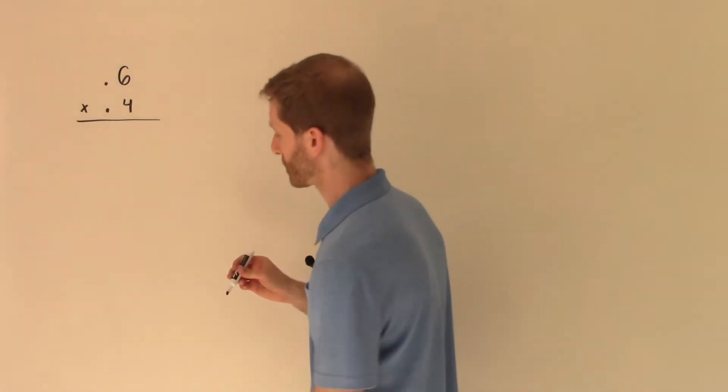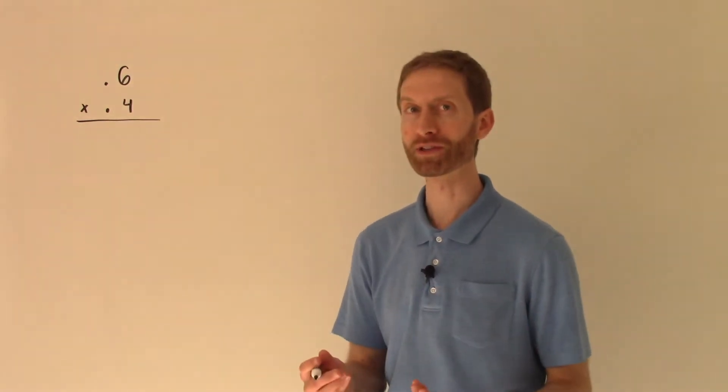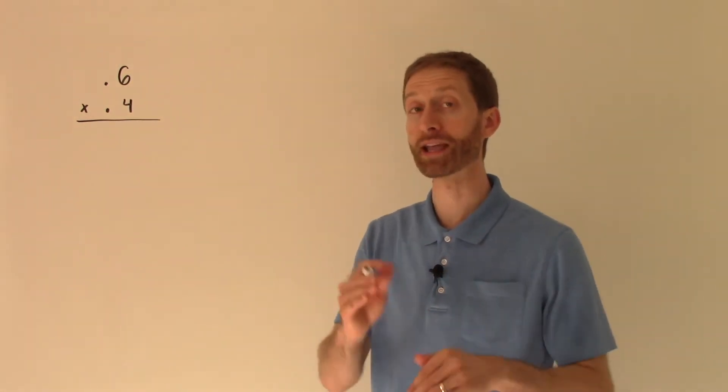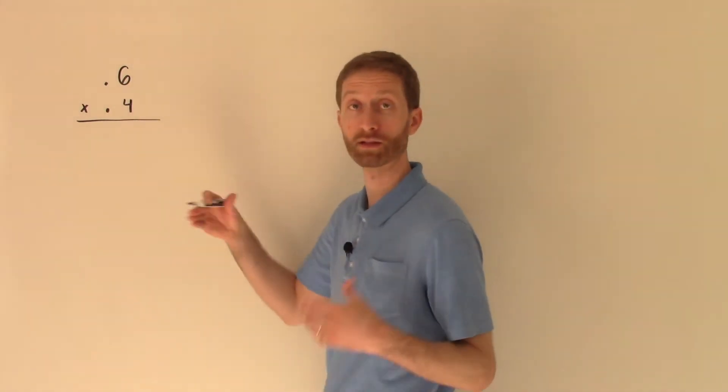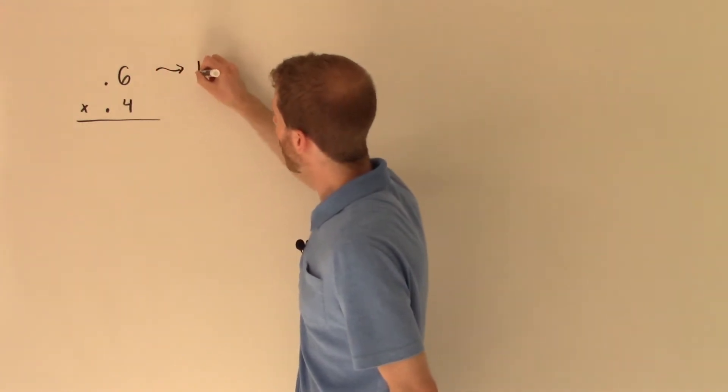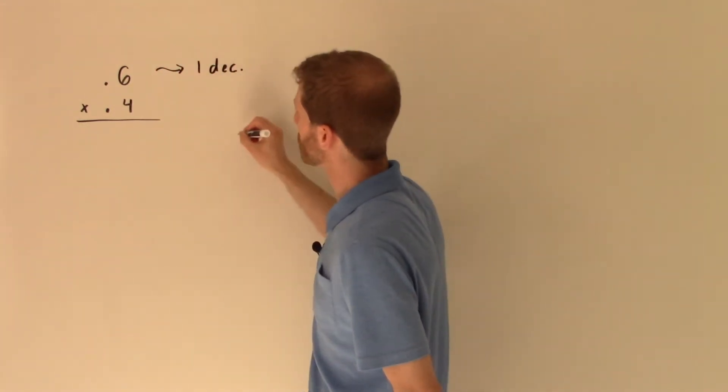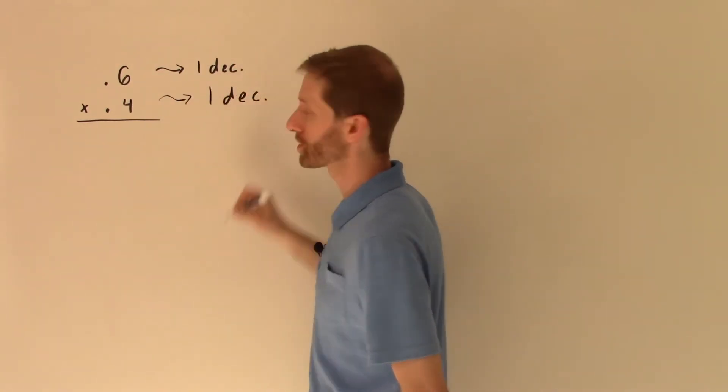When you multiply decimals, what you essentially do is you ignore the decimal points aside from just noting in the beginning how many decimal places there are in each part of the product, the multiplication problem. So I note here that we've got, let's see, one decimal place. So I'll just call it one decimal. And then here we have one decimal place, right? Each are tenths.